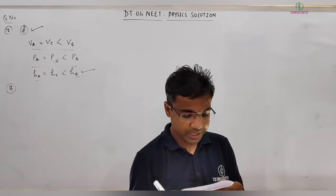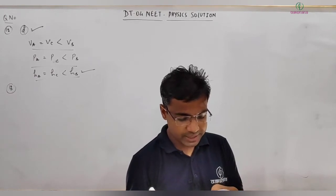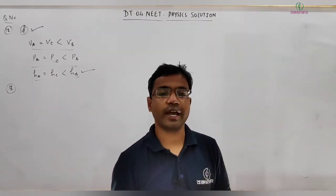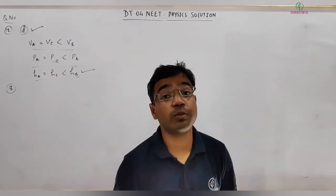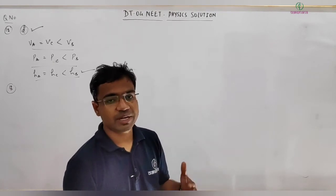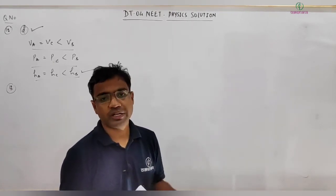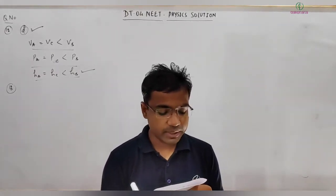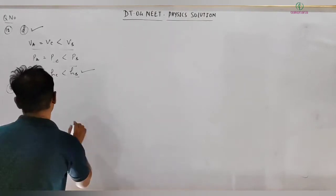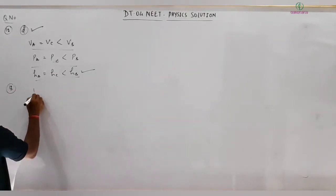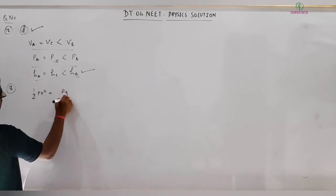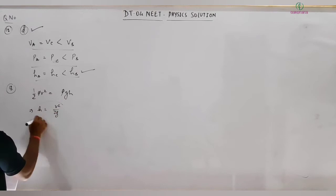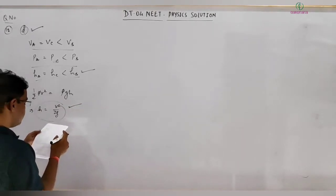Question 13: A glass tube is immersed in flowing water with its opening pointing against the flow. The kinetic head of water converts to pressure difference due to height: (1/2)ρv² = ρgh, giving h = v²/(2g). The speed of water can be determined from the height of liquid rise. This matches option A.